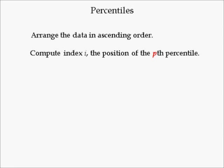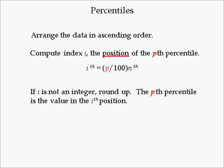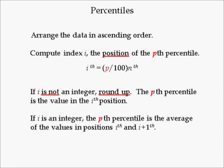The p-th percentile is the i-th value of the sorted data. The index number i is equal to p divided by 100, times the sample size n. If i is not an integer, round i up to the nearest integer — the p-th percentile is the value in the i-th position of the sorted data. However, if i is an integer, the p-th percentile is the average of the values in the i-th and the (i+1)-th positions of the sorted data.